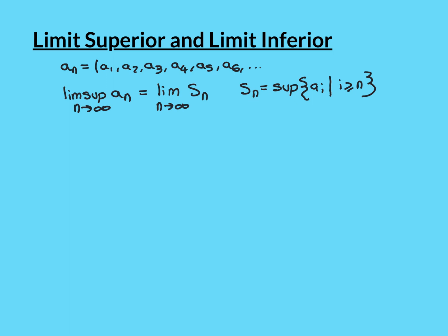Each term in this sequence is the supremum of a set. You take the set of all the things from the original sequence such that you take all the terms where the index is greater than or equal to n. So S1 is obtained by taking every single term from the sequence, putting them all into a set, and then taking the supremum of that set — that gives the term S1.